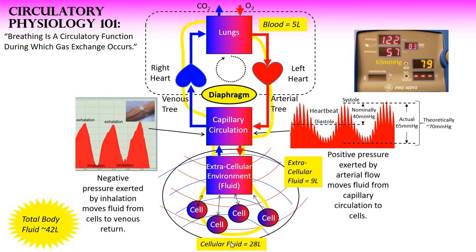Note that there are 42 liters of fluid in the body in total, but only five of those liters are blood. This blood makes this circle estimated in contemporary medical literature as flowing through this circular system one time per minute — the five liters makes its way through this loop one time per minute. This is the typical adult rate of blood flow.